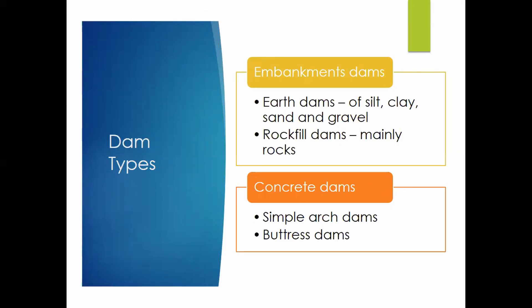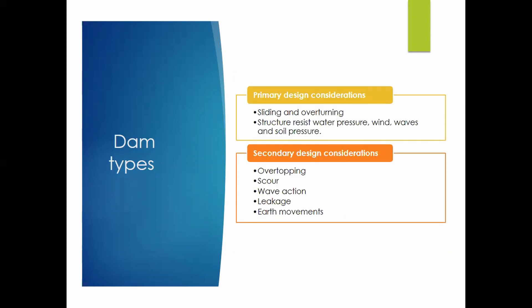There are two main types of dams: embankment dams and concrete dams. An embankment dam is split into earth dams, which are made of silts, clays, sands and gravels, and rockfill dams, which are mostly made out of rock. Concrete dams include simple arch dams, multiple arch dams, and buttress dams.